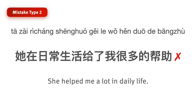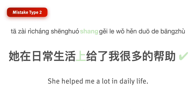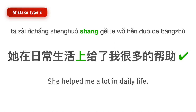For example: 他在日常生活给了我很多的帮助. This sounds off because we should say 他在日常生活上给了我很多的帮助. 在 something 上 means 'when it comes to something' or 'with regard to something.' 在日常生活上 means 'in daily life,' 'in the aspect of daily life,' or 'when it comes to daily life.' If this 上 goes missing, it sounds weird. So missing prepositions is a big problem.